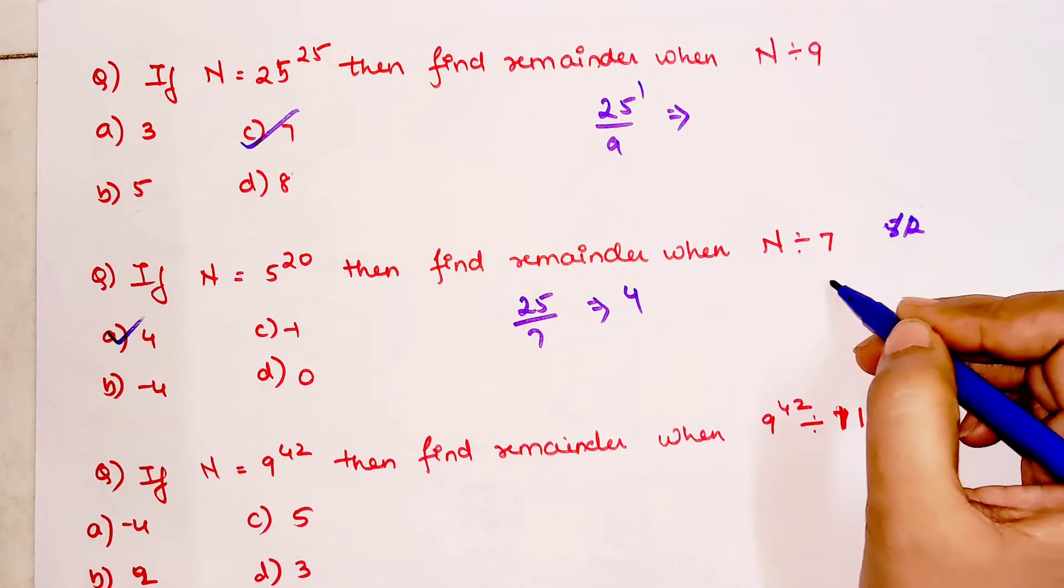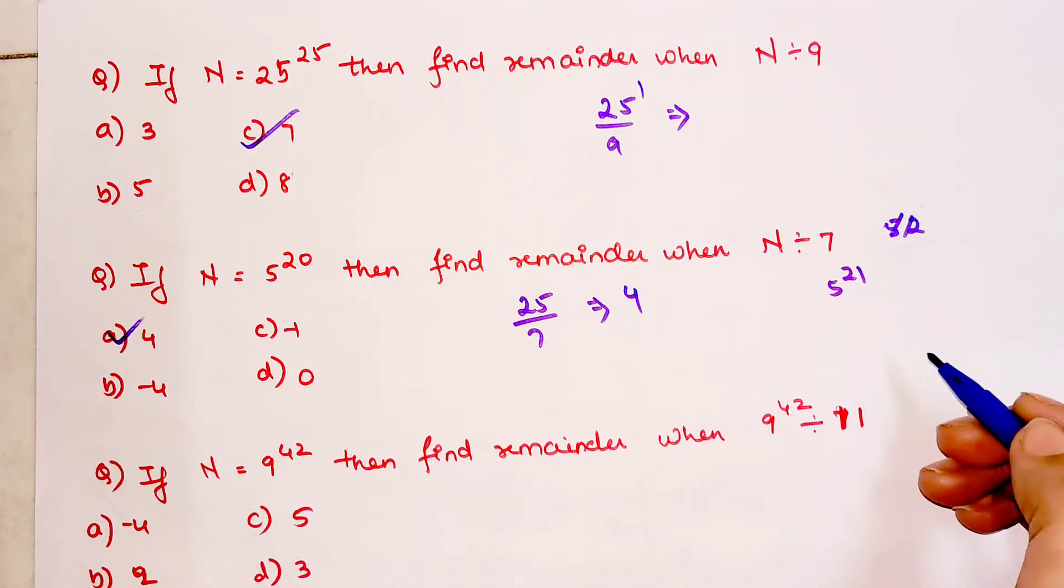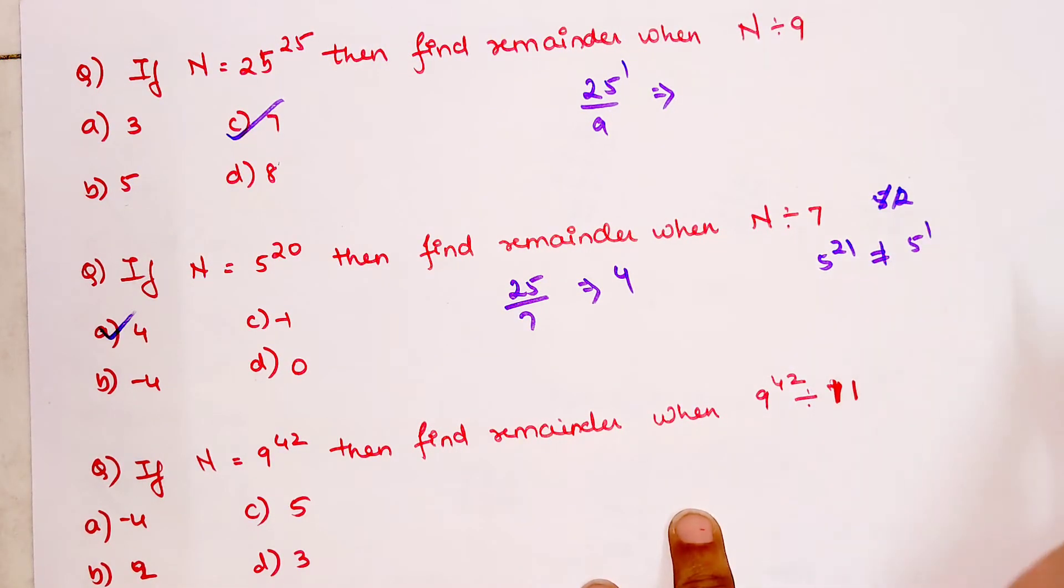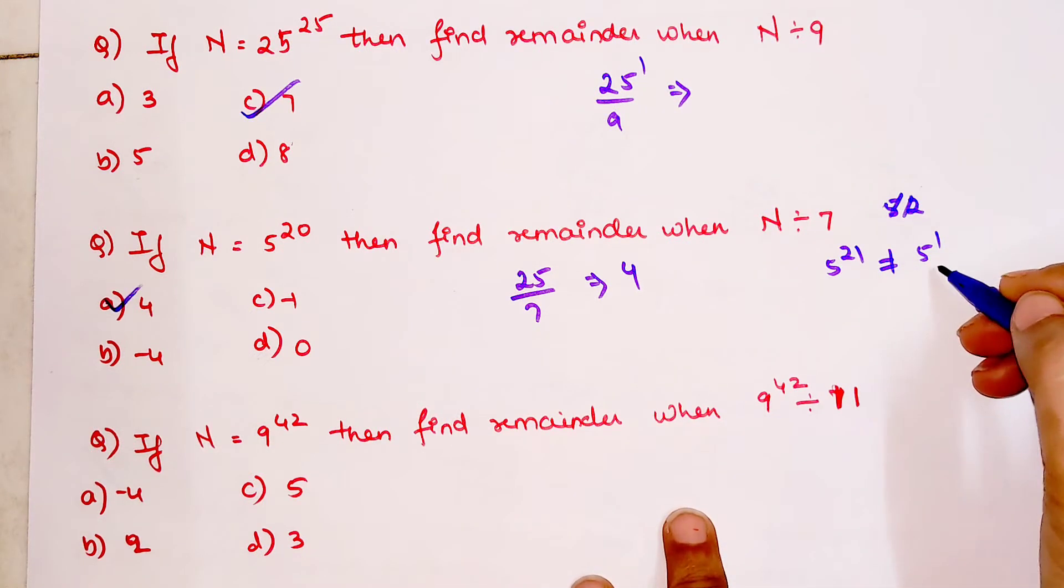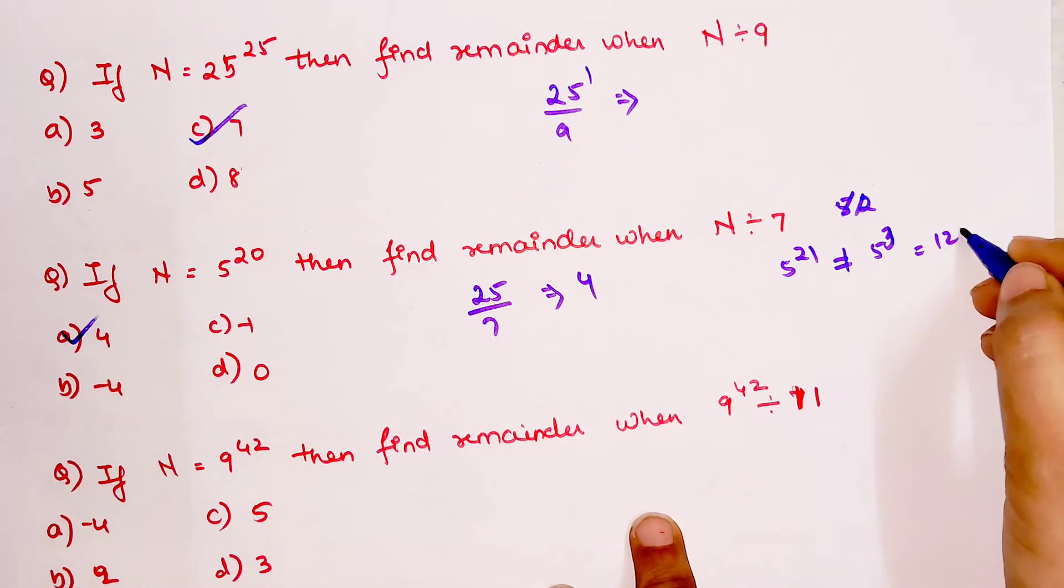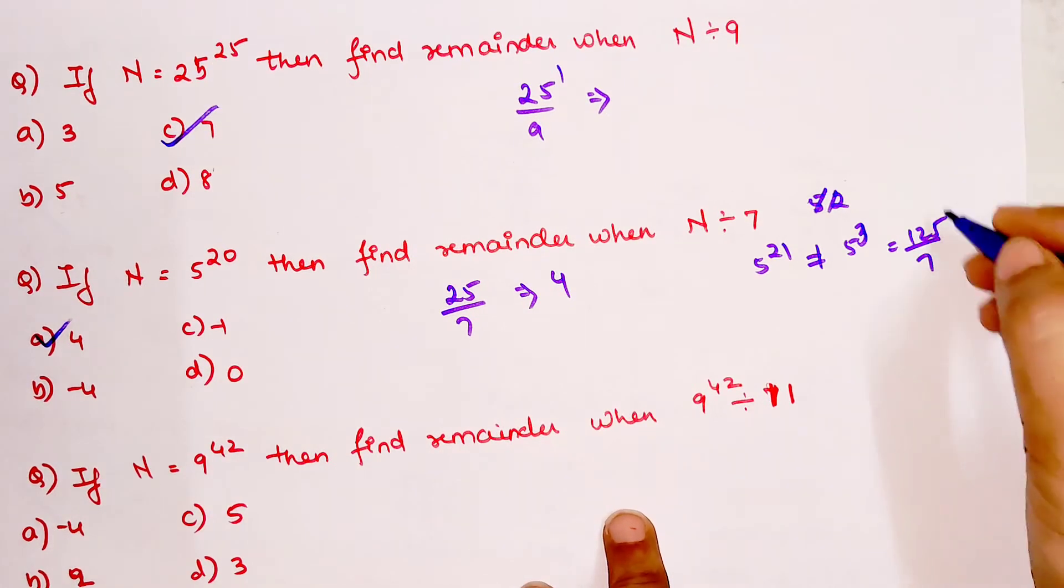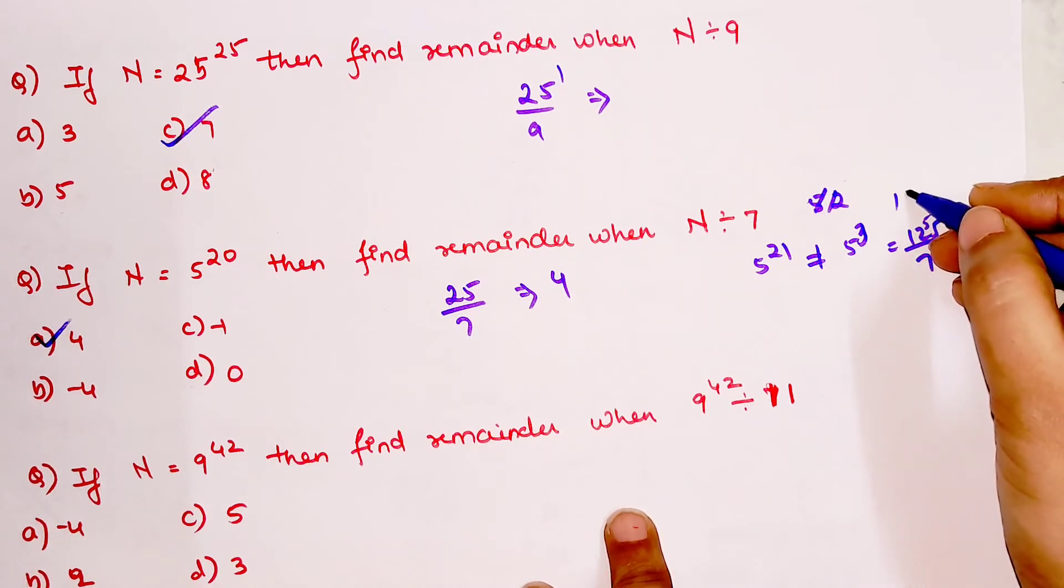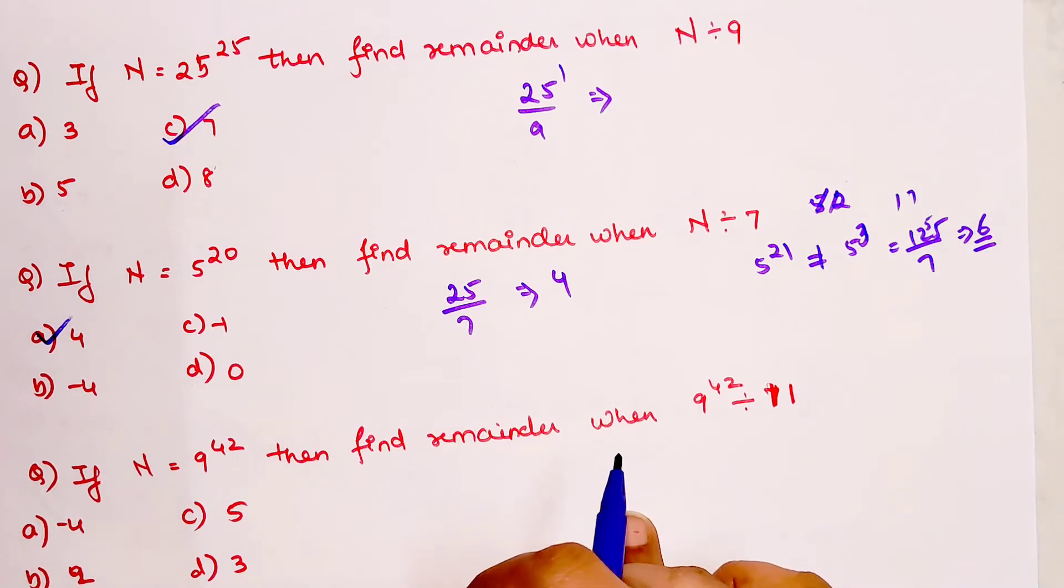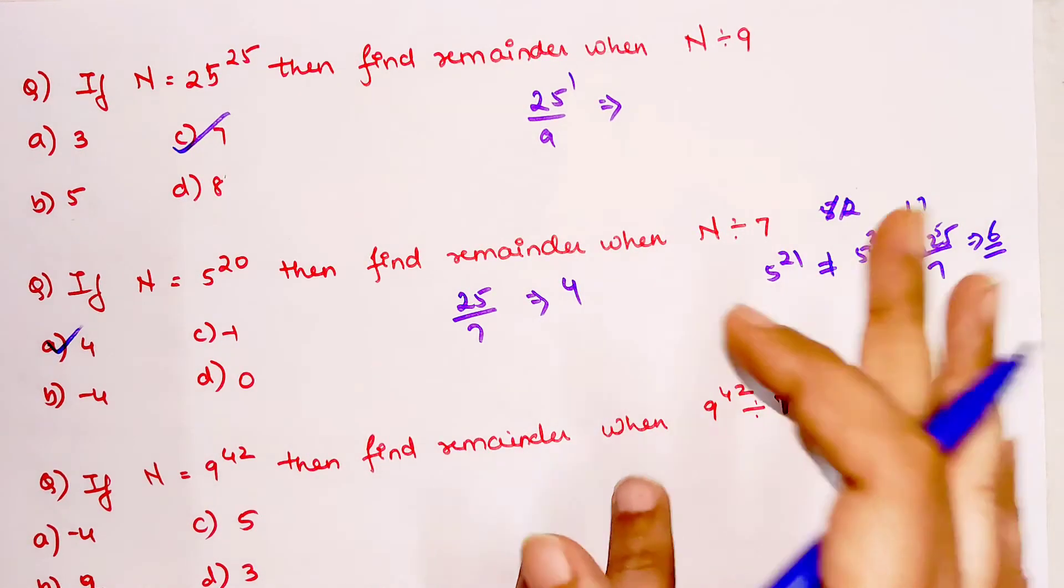Now please understand, if this was 5 raised to 21, in that case you can't do 5 raised to 1 because that is again smaller than 7. So what you should do in this case is you do 5 raised to 3. So this becomes 125 divided by 7. So that gets you 17, and then you are left with 5. So you get 6 as your remainder. I hope you all are understanding.